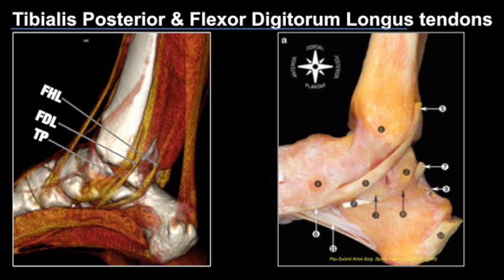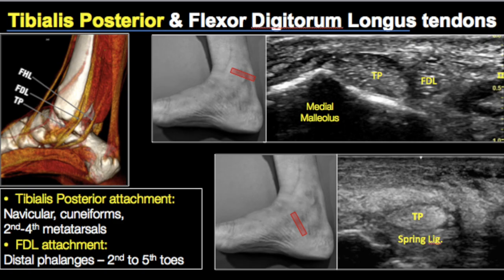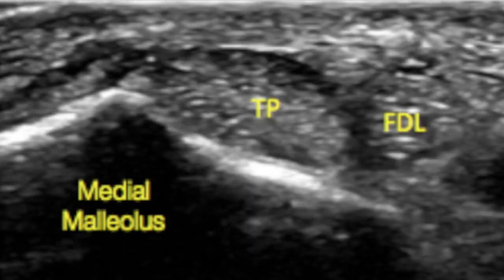The tibialis posterior on the short axis is seen as an echogenic structure with a brush border appearance — it looks like any other tendon in the body. Right adjacent to that is the flexor digitorum longus tendon. The tibialis posterior is almost twice the size of the FDL tendon. When scanning, we scan all the way from the supramalleolar segment, the retromalleolar, and the inframalleolar segment as the tendon attaches over the navicular.